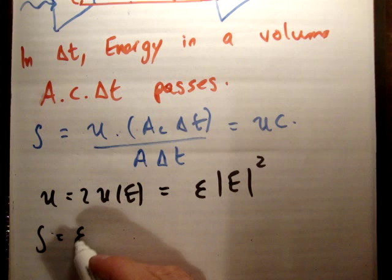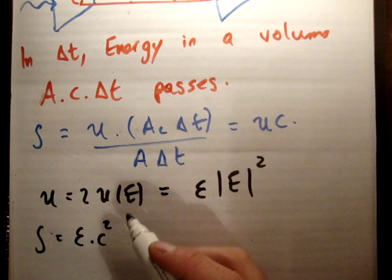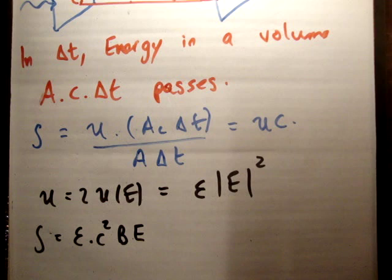So as a result, we're going to find that S is equal to epsilon times c squared times the magnetic field times the electric field. Because the amplitude of the magnetic and electric field is the same.